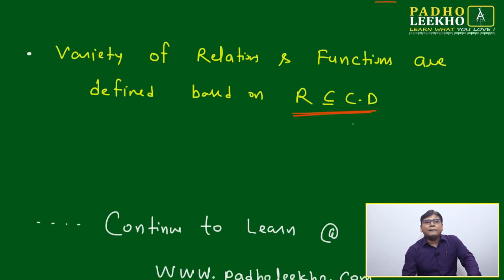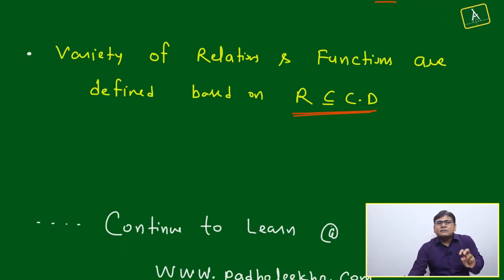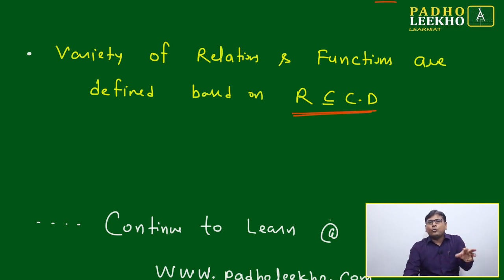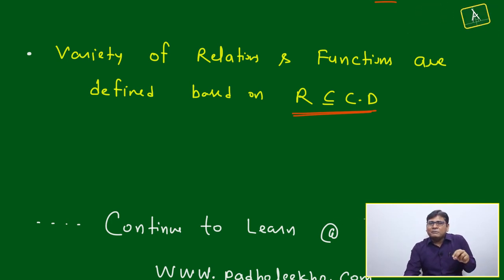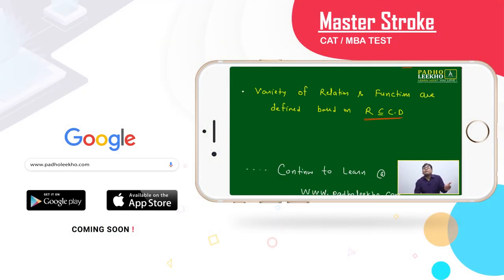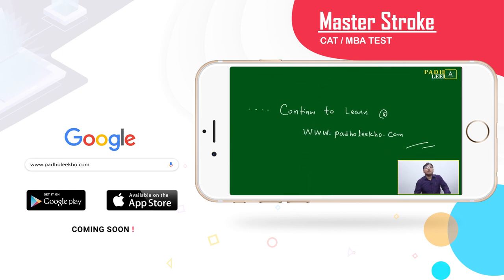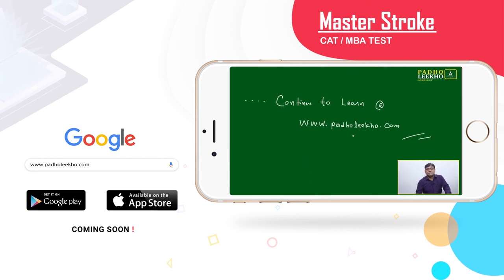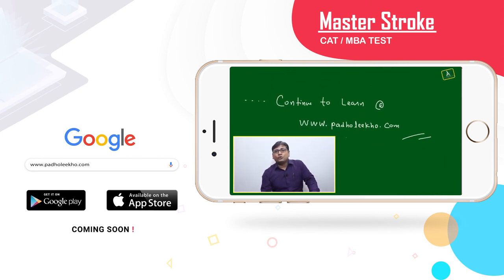Based on this, range is a subset of co-domain. Variety of relations and functions are defined based on this, and a variety of problems are asked in all types of exams. Continue to learn at perolico.com. Thank you.